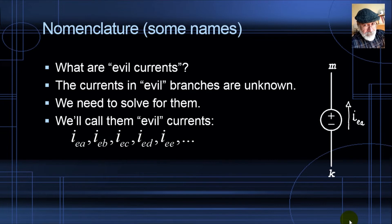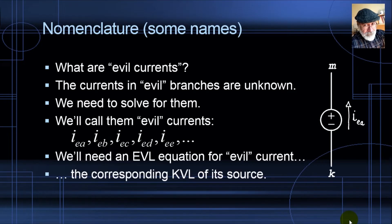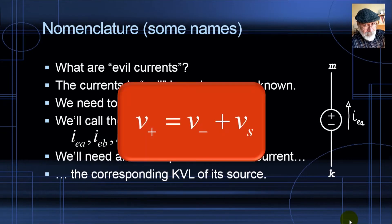We call them evil currents and we label them like that: I sub EA. That is evil A, evil B, evil C, etc. We will need an evil equation for each one of the evil currents, of course. The evil equation is the corresponding KVL equation of the source, as we saw in the previous video. This one: V of the positive node, in this case Vm, is the V of the negative node Vk, plus the value of the source, whatever value it has.